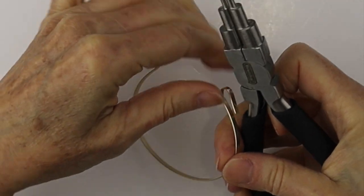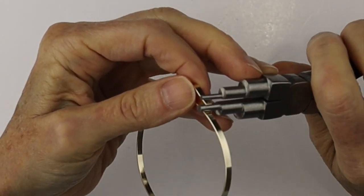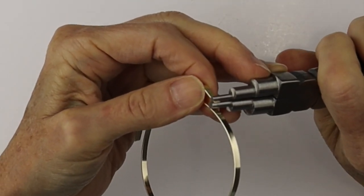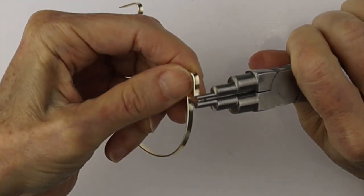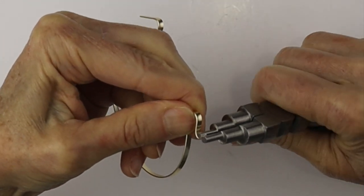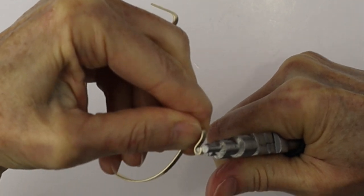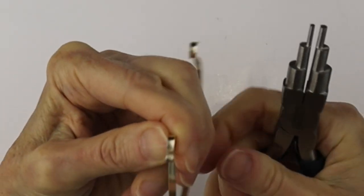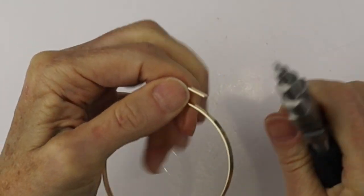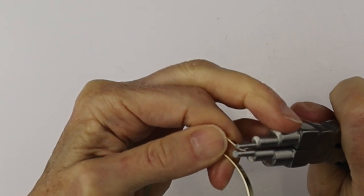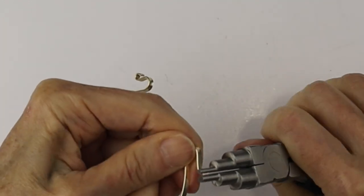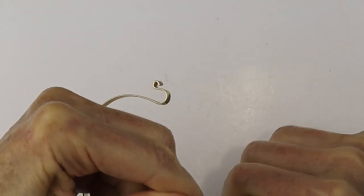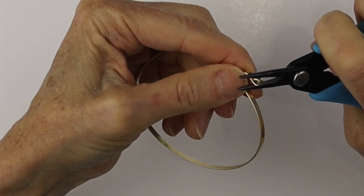Then I'm getting my bead looping pliers. This way we can get a consistent loop because the little ends are cylinder, they're not tapered. So we can get a nice even loop on either side. Just grab the end with the looping pliers and bend it around.